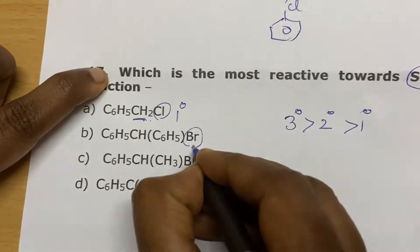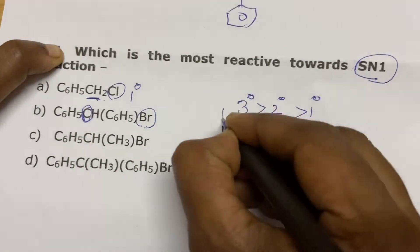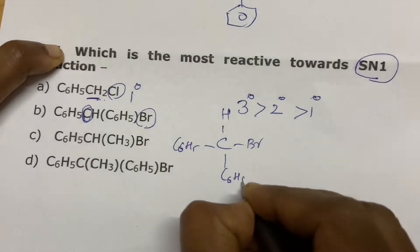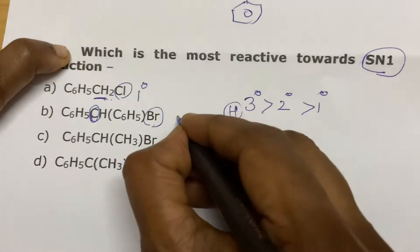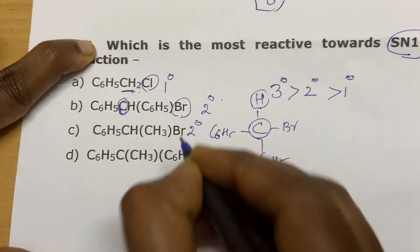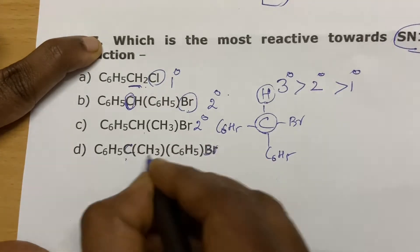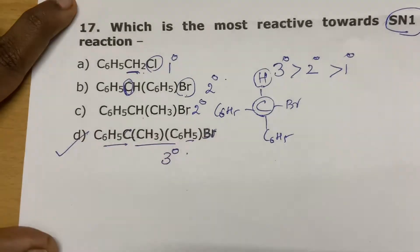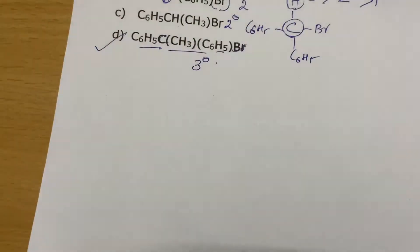Here, bromine is attached to a carbon with one hydrogen and two C6H5 groups, so it is secondary. Another compound is also secondary. And this carbon — bromine is attached to it and it has no hydrogen — so it is tertiary. So option D is most reactive towards the SN1 mechanism.